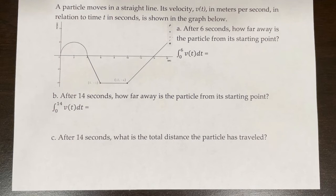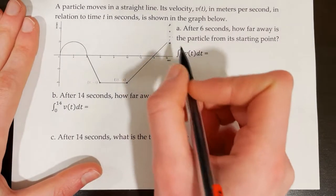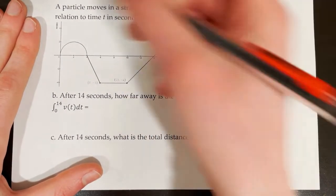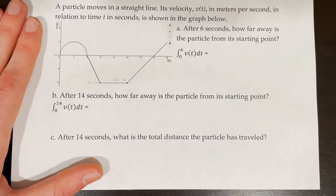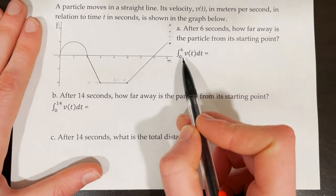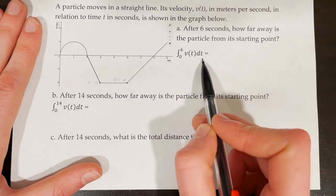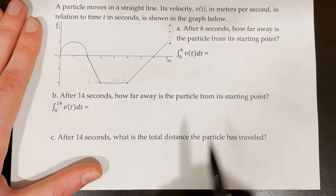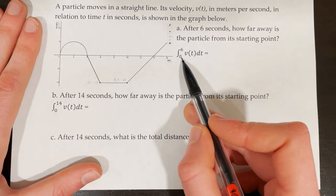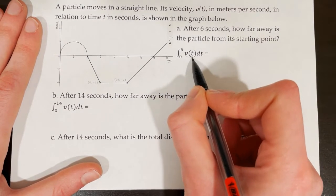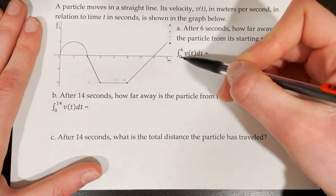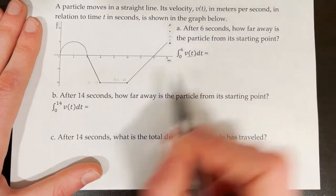A particle moves in a straight line. Its velocity v(t) in meters per second in relation to time t in seconds is shown in the graph below. Along the x-axis we have seconds and along the y-axis we have meters per second. Part A says after 6 seconds, how far away is the particle from its starting point — what is the displacement of the particle? This is integral notation, but it simply means find the area under the curve of v(t) from time equals 0 to time equals 6. That is all that this notation means.